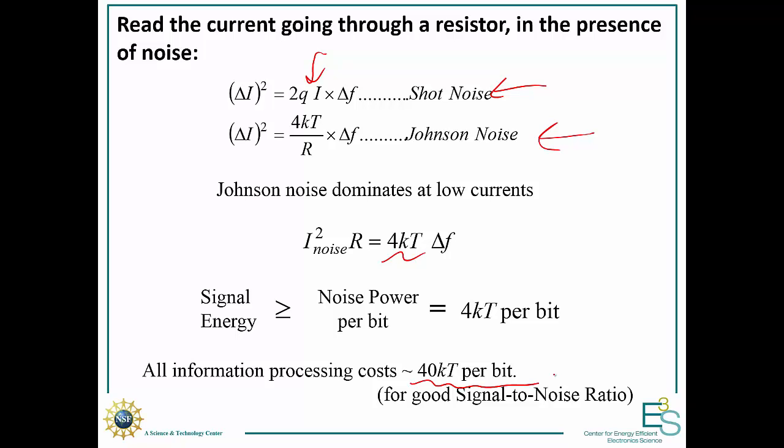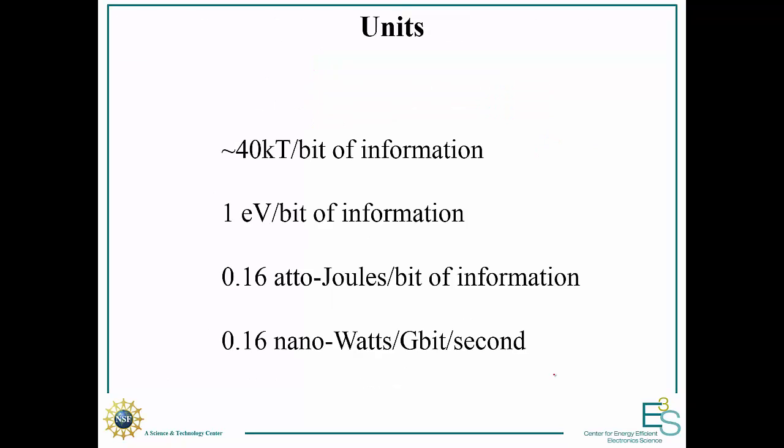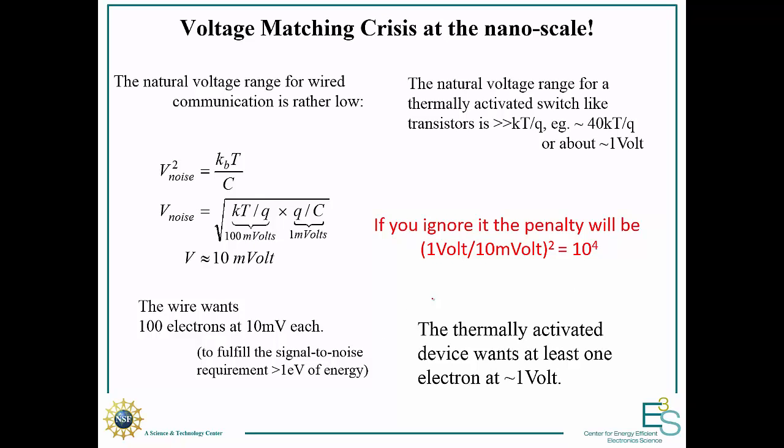Unfortunately, we're orders of magnitude away from this. Let me give you an idea of what 40 kT per bit of information actually means. That's equivalent to one electron volt per bit, or 0.16 atto joules per bit of information, or 0.16 nanowatts per gigabit per second. It's a very small amount of energy that's actually required to overcome noise. Unfortunately, we're nowhere near this.